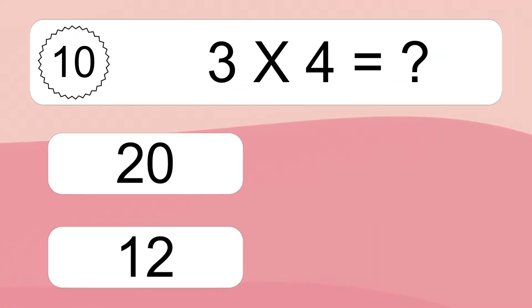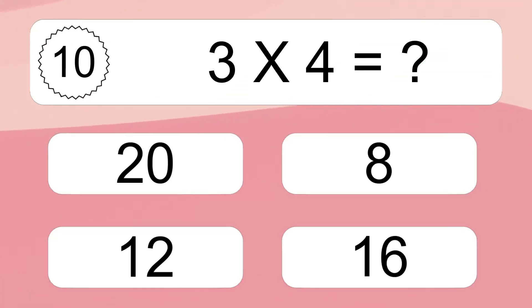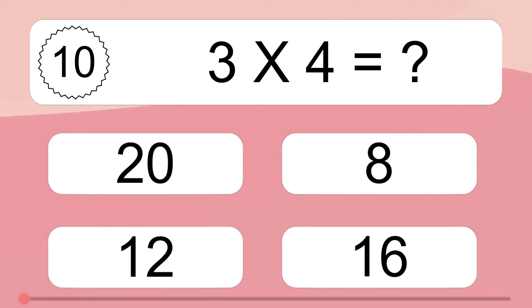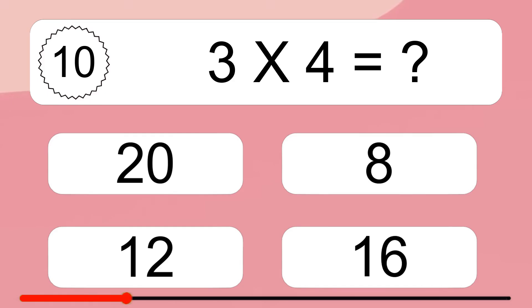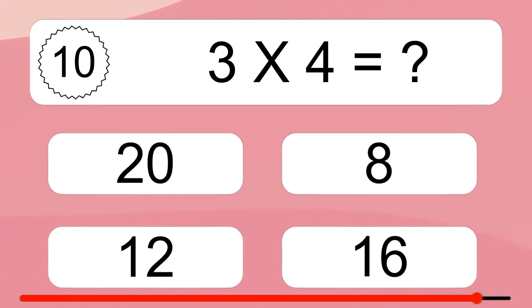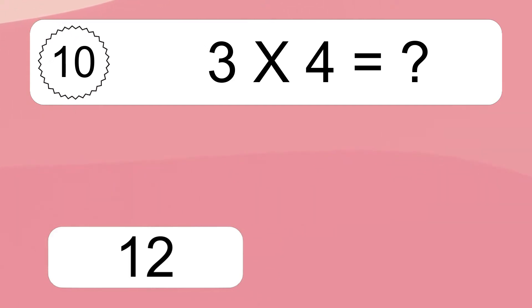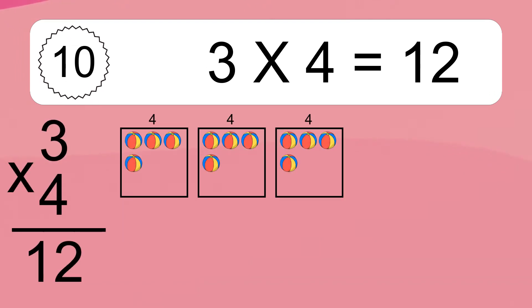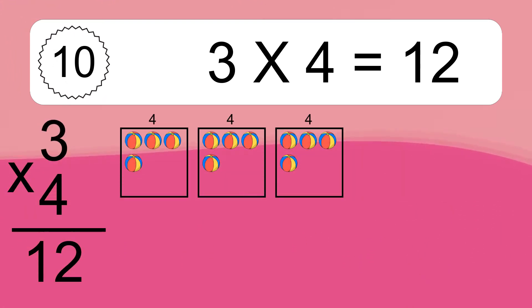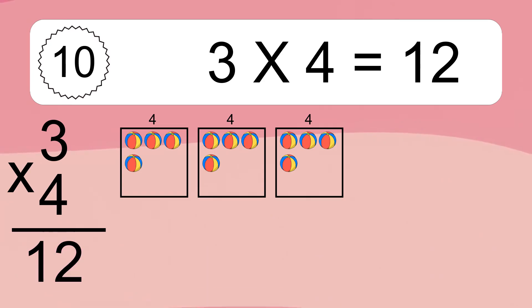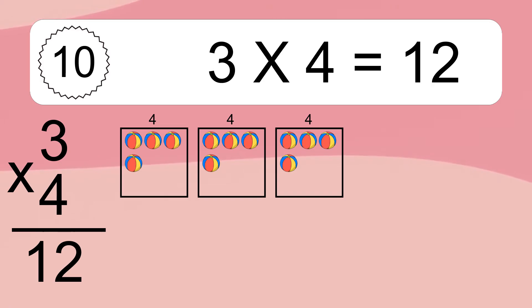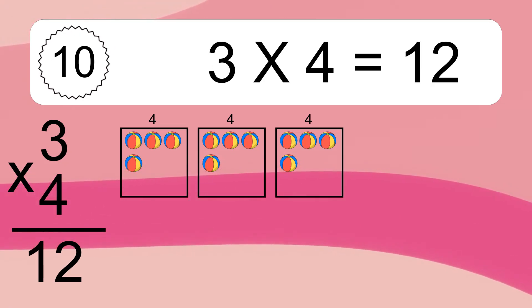Three times four equals what? Three times four equals 12. We have three boxes and each box has four colorful balls inside. If you count all the balls in all the boxes together, you will have three times four balls. This equals 12 balls.